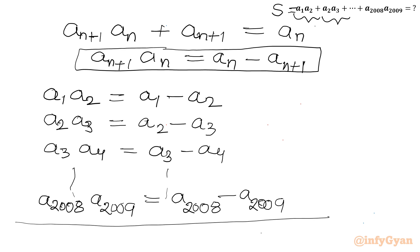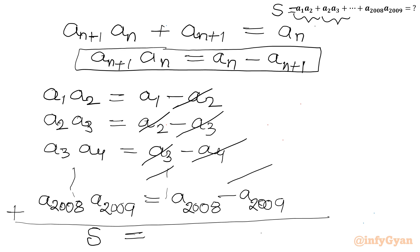Now let us add all these terms to get S on the left-hand side. On the right-hand side we have (a_1 - a_2) + (a_2 - a_3) + (a_3 - a_4) + ... + (a_{2008} - a_{2009}). These intermediate terms cancel out, and only two terms are left.